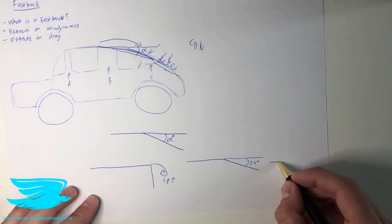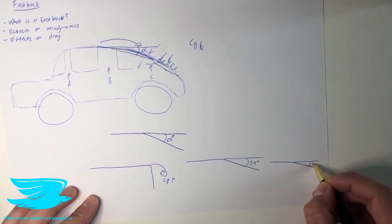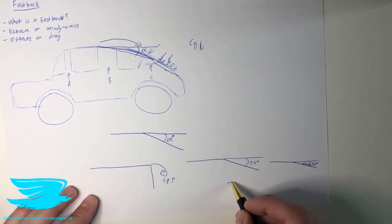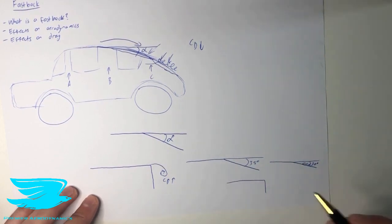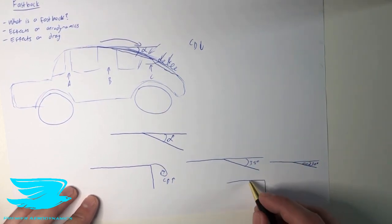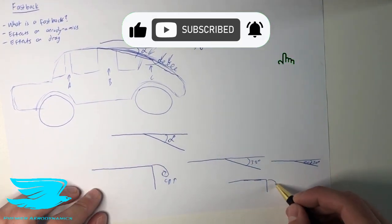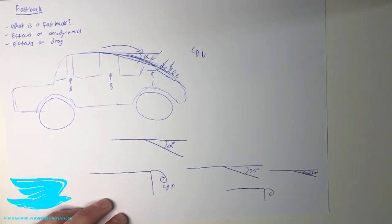So once we start getting to about 30 degrees, these vortices will start to now form. And that will keep forming until we go down to completely flat again. And then we, again, approximate this square back because you have to have a back to a car. So this angle now, which is between this surface and this surface, is zero degrees because they're exactly mating perfectly. And then you'll get a lot of separation again. So there's a sweet zone where the fastback is actually very aerodynamic.